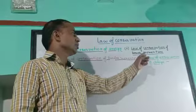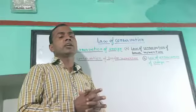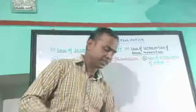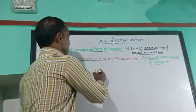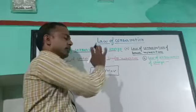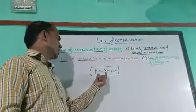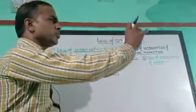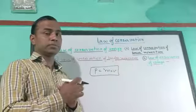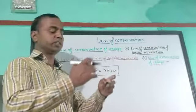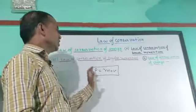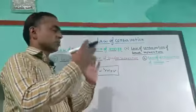The second is the law of conservation of linear momentum. Momentum is denoted by P, and it is the product of mass and velocity — P equals M into V. If no external force acts on a system, its linear momentum remains unchanged.